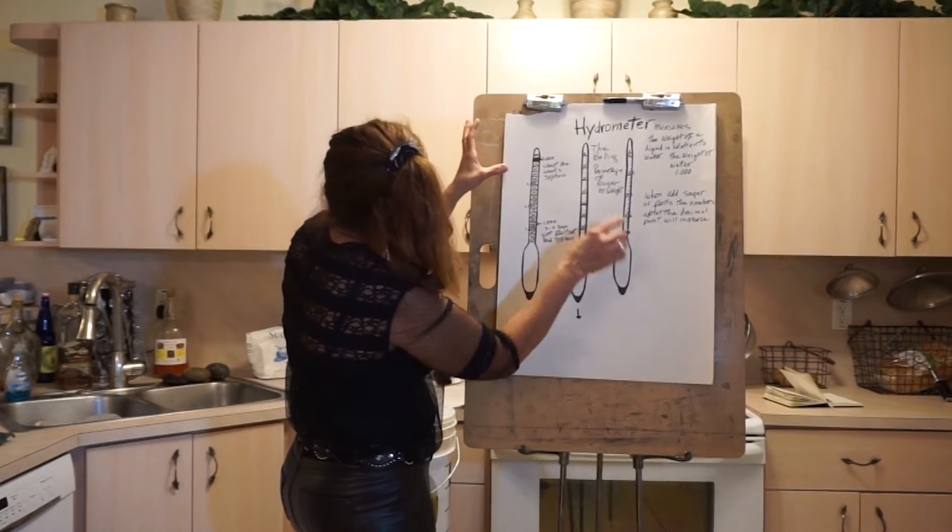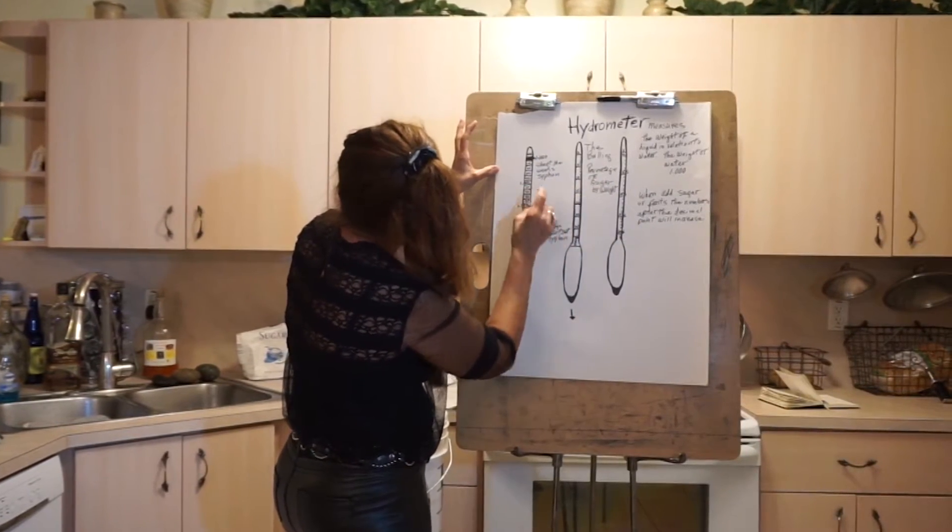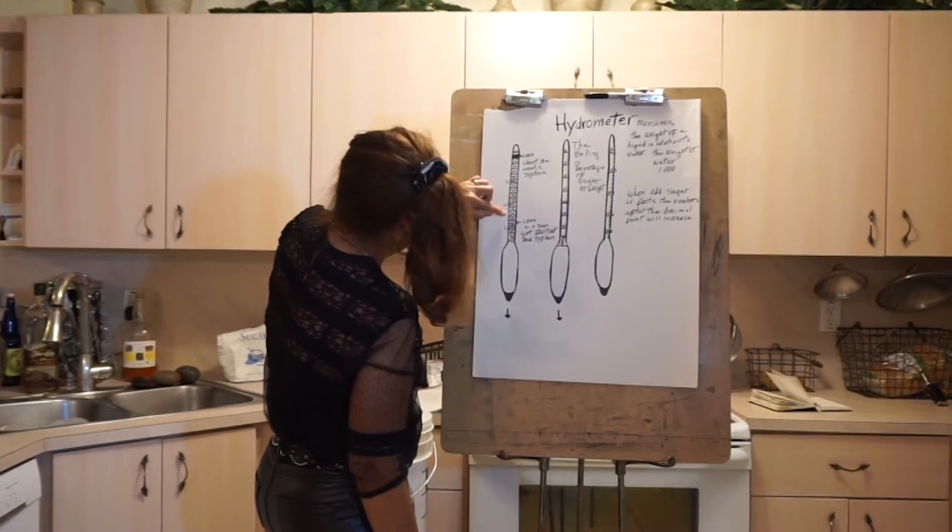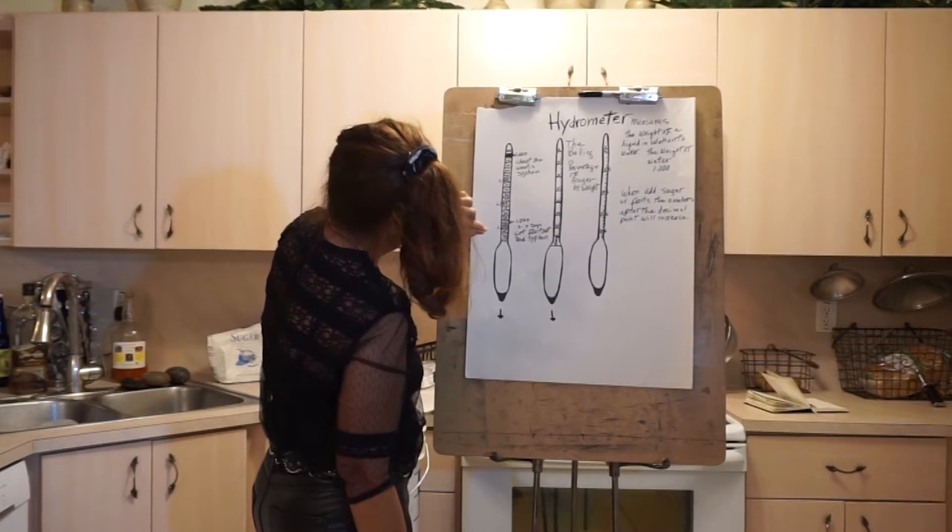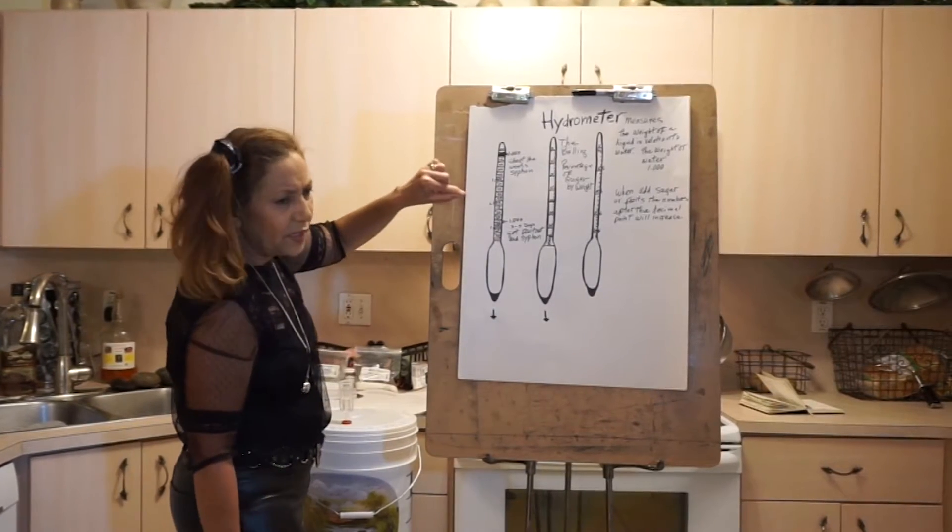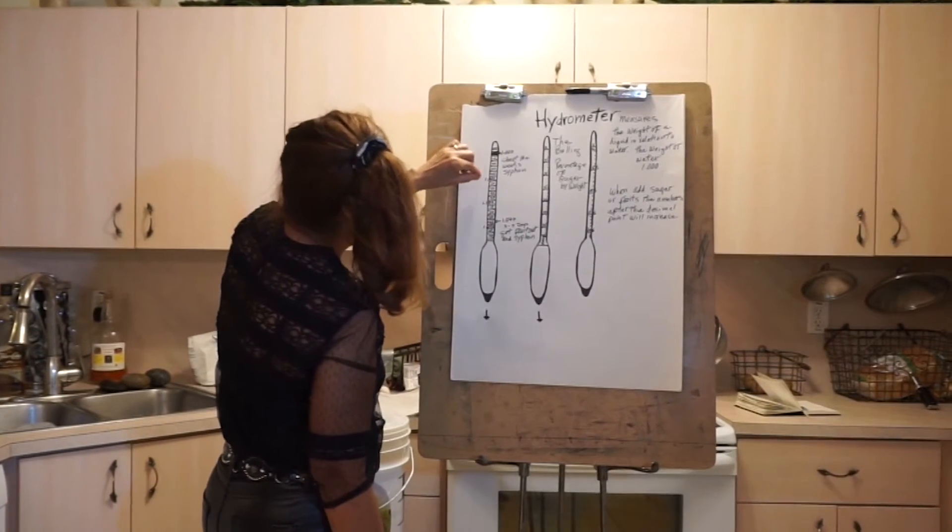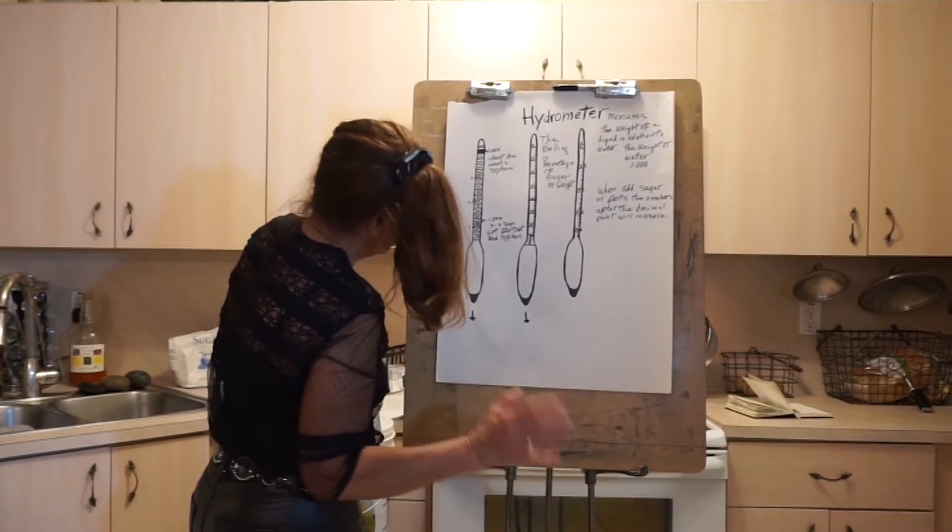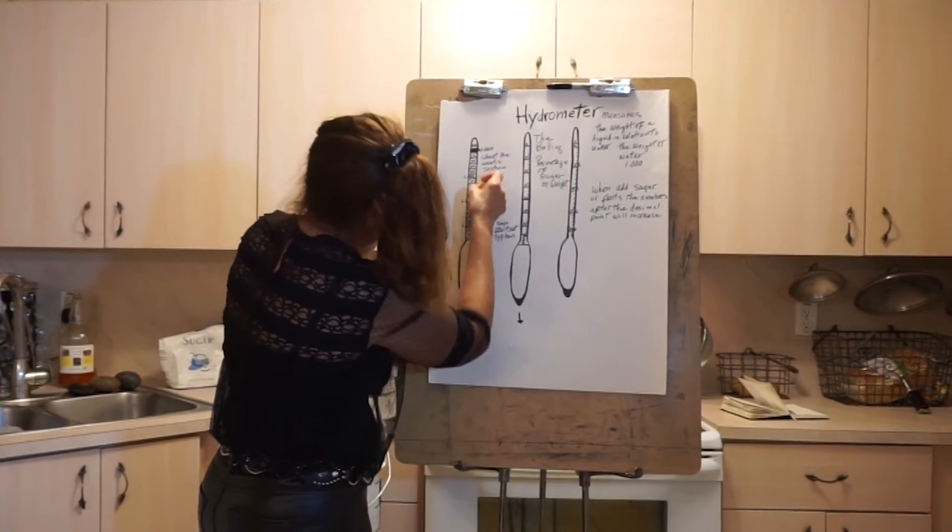When you start adding the fruits and other stuff, you might get to maybe 1020. But I don't usually measure the sugar and water on this side of the hydrometer initially.